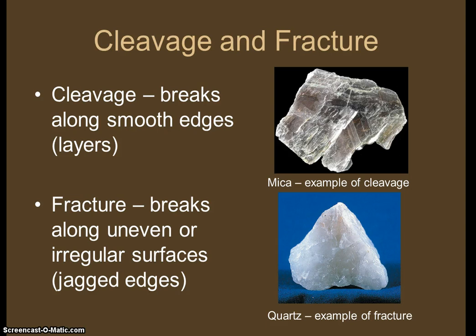Cleavage and fracturing is how the mineral breaks. If it breaks in layers, that's cleavage — cleaving means it peels off in layers. Fracturing means it breaks along whatever surface it wants, so it has jagged or irregular edges. Looking at the examples here, mica at the top is super flat on the bottom and peels off in layers — that's cleavage. Quartz below is just cracked in all different directions — that's an example of fracturing.